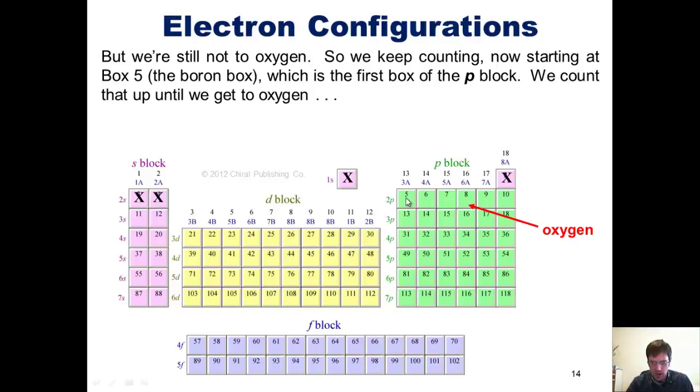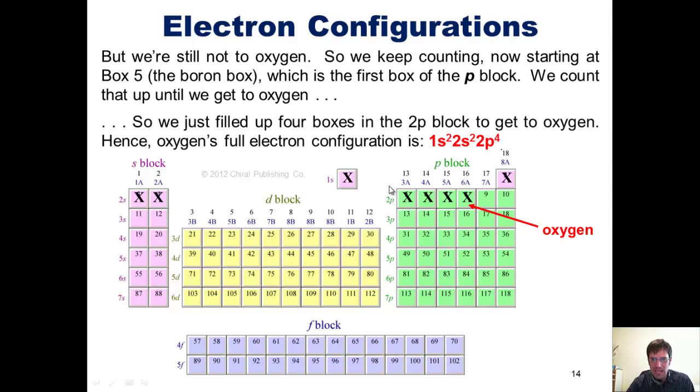Because we filled up the 2s row with two electrons here, the electron configuration we've made so far up to this box is 1s2, 2s2. But we're not to oxygen yet. We have to keep going. So we continue counting, starting at box 5. This box, the boron box, is also the first box in our p-block, and it's on row 2p. So we count up how many boxes over we have to go until we get to oxygen. One, two, three, four. We just filled up four boxes in the 2p block to get to oxygen.